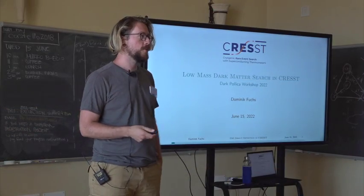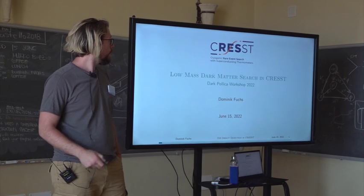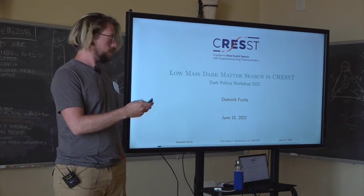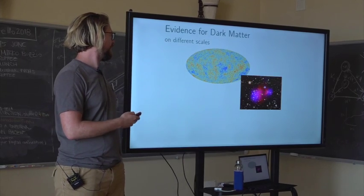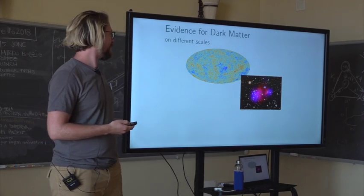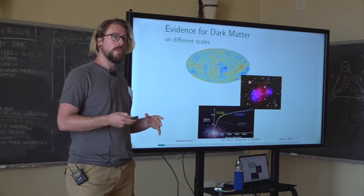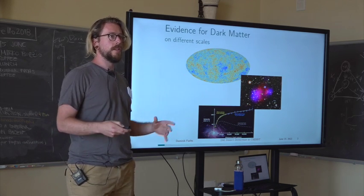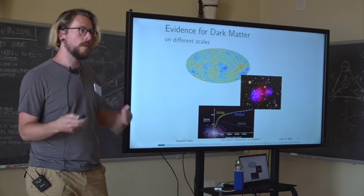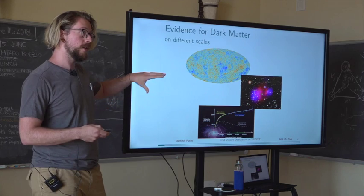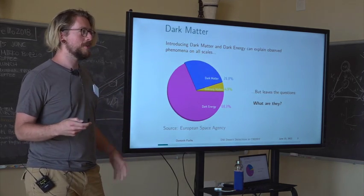I'm going to talk about the sub-GeV direct detection that we're doing in CRESST. I can go quite fast over these first few slides because it's well-known that we have evidence for dark matter on all different scales. The nice thing about introducing the idea of dark matter and energy is that it can explain all of these phenomena on all scales, compared to other ideas that try to explain only one of these. The problem is that we still don't know what it is, which is why we're here.